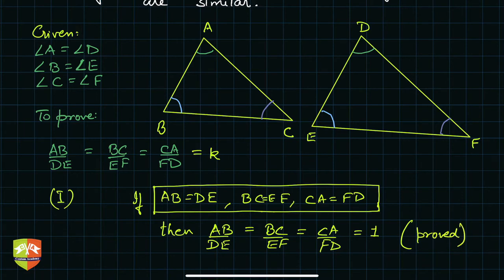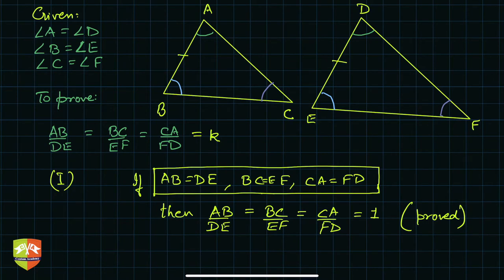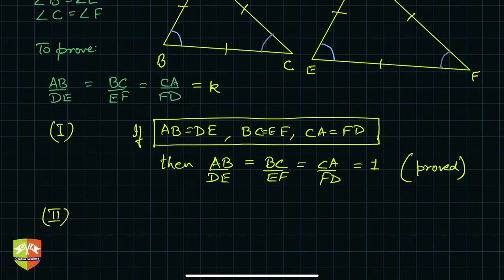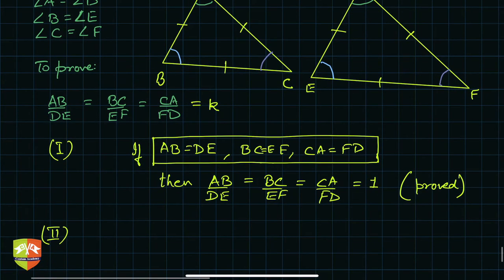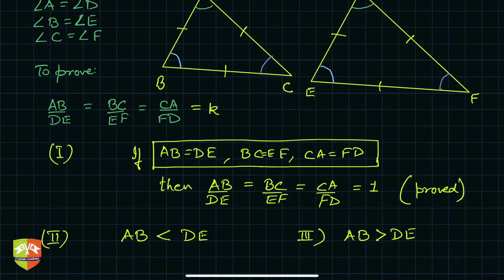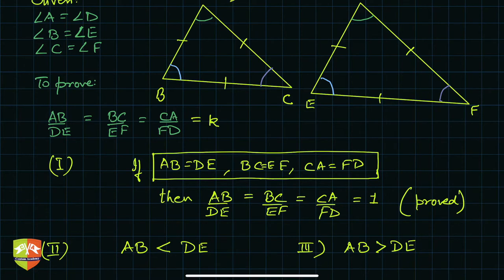That was only one case where all sides are equal. The other two cases are AB less than DE, or AB greater than DE. Cases two and three are essentially the same — it's just a matter of naming. Whether you call the left triangle ABC or DEF, you can swap names and get the same result, so the proof will be the same for both.